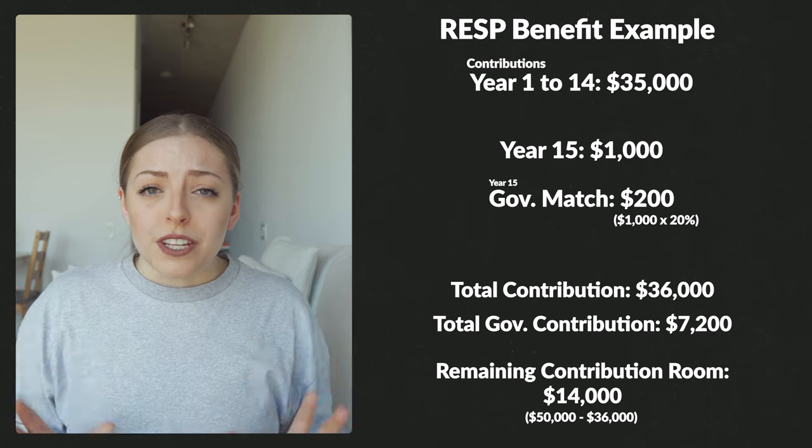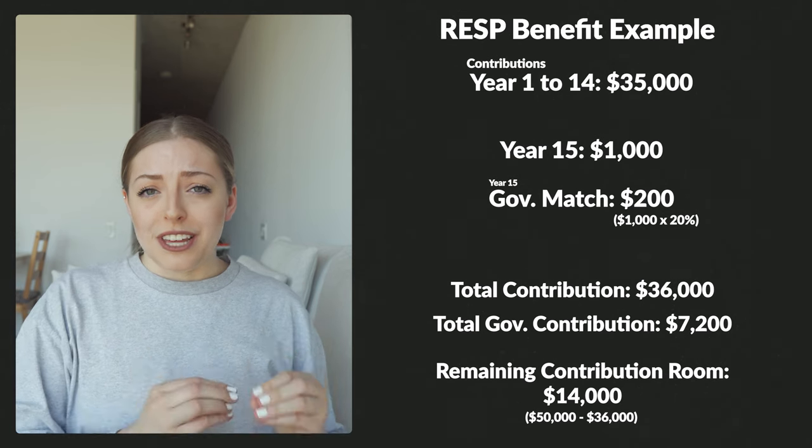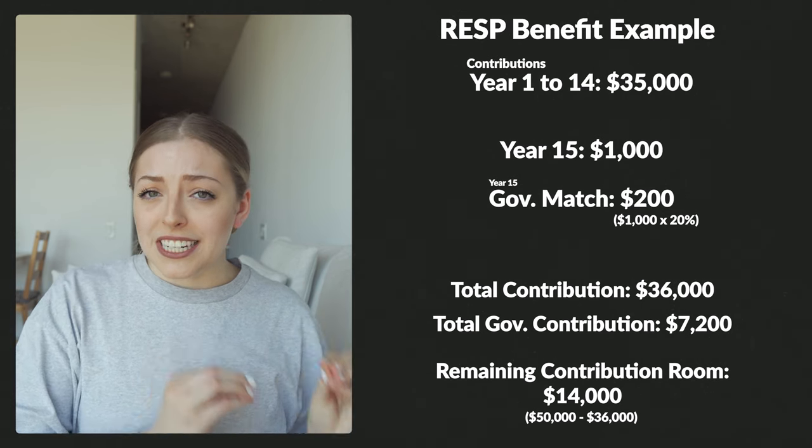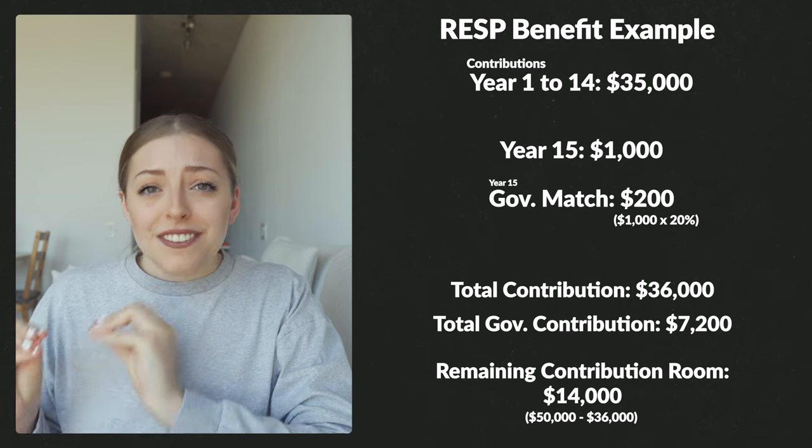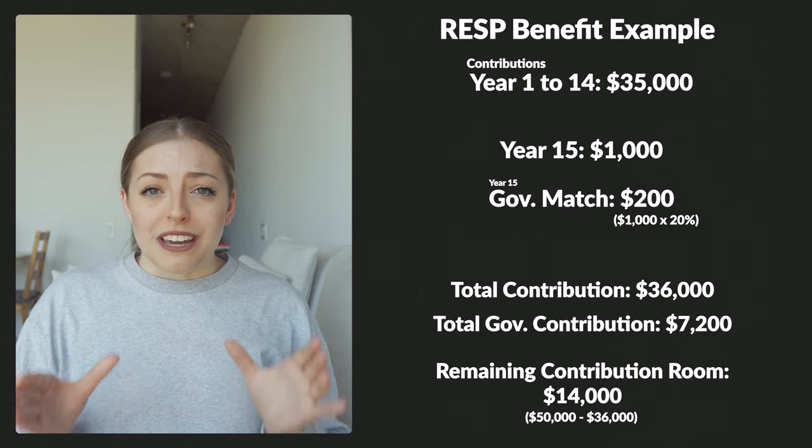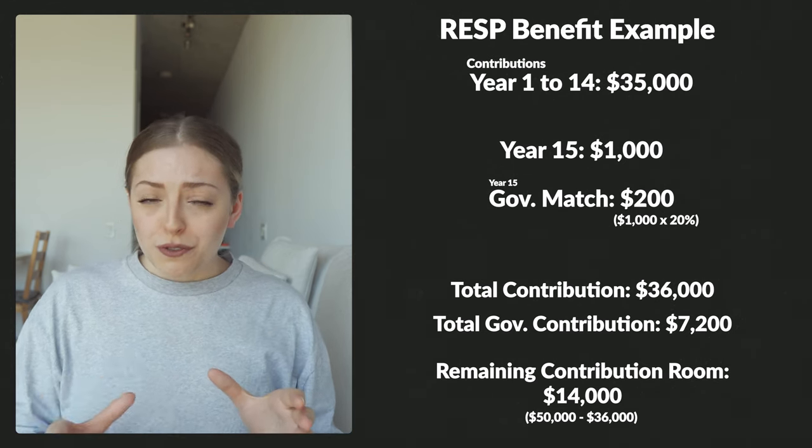That $50,000 contribution limit is just for your contributions — it doesn't include the up to $7,200 in government matching or any money that grows on top of your contributions. So if you followed the example of putting in $2,500 per year for 14 years and then $1,000 in the 15th year, after that point you'd only have $14,000 more in contribution room before you hit that max. If you don't open an RESP when the kid is born and want to contribute in random chunks, just keep in mind that overall lifetime max of $50,000.